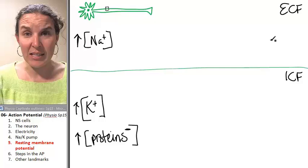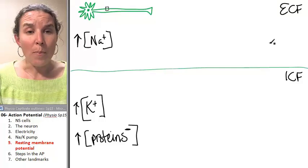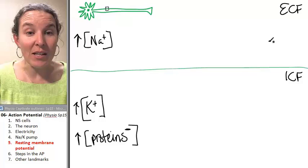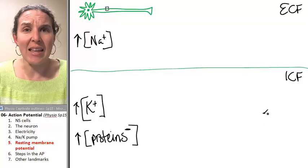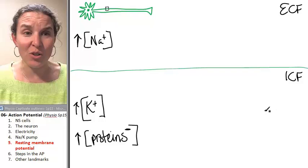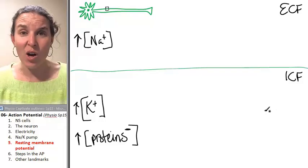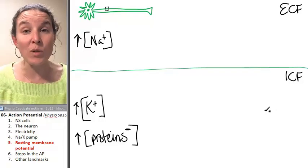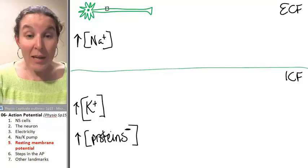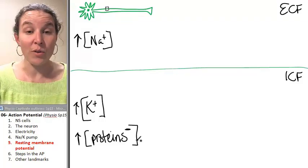But the proteins are the machines that are making stuff happen. So, of course, inside the cell, you're going to have a ton of them because your cell is this little crazy factory where stuff is happening all the time and you need proteins to make all that action happen. So it makes sense that we would have a high concentration of proteins inside.